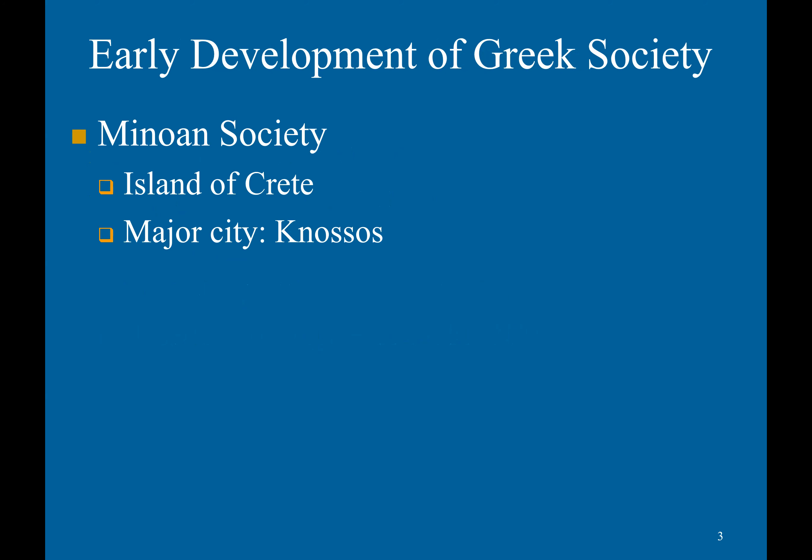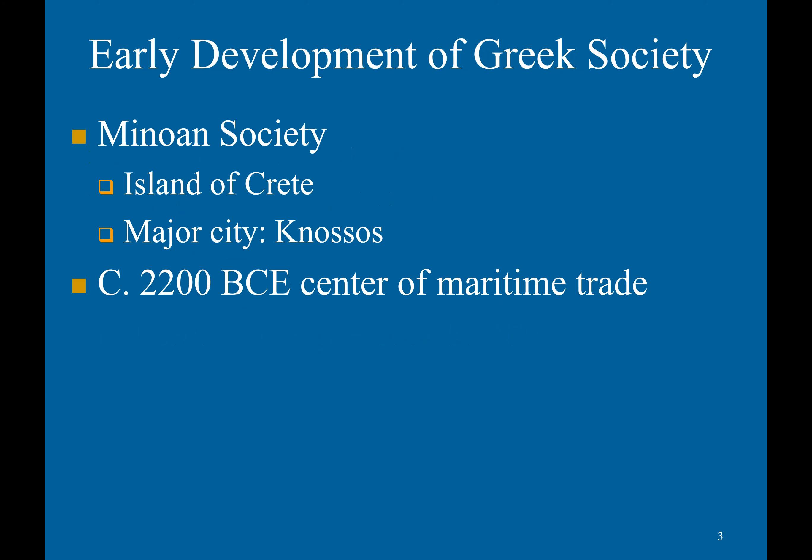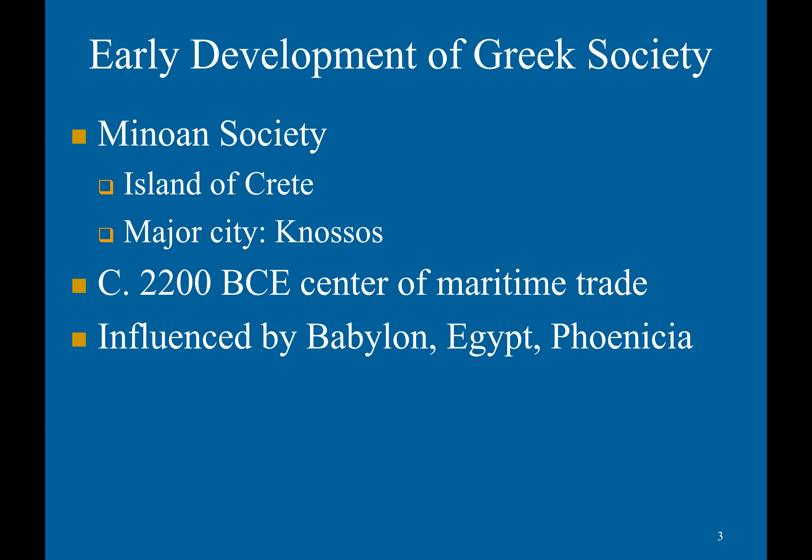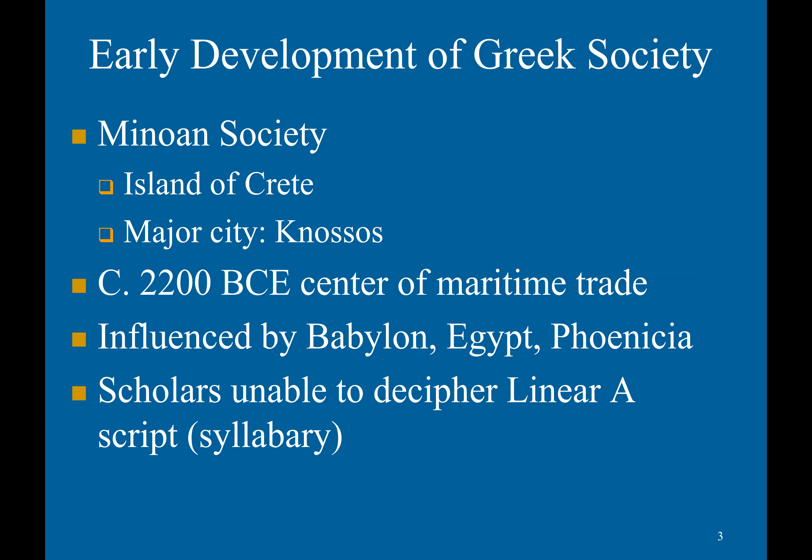The first major society was the Minoan Society, located on the island of Crete, with a major city at Knossos. It began around 2200 BCE and was a major center of maritime trade. It was influenced by Babylonian, Egyptian, and Phoenician society — not surprising given its location as a nexus of trade networks. They developed a script called Linear A, which was a syllabary; however, scholars have been unable to decipher it.